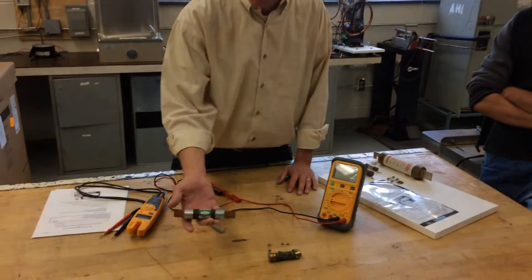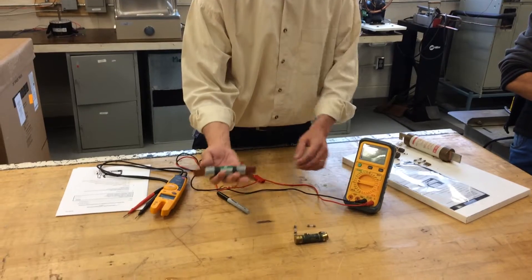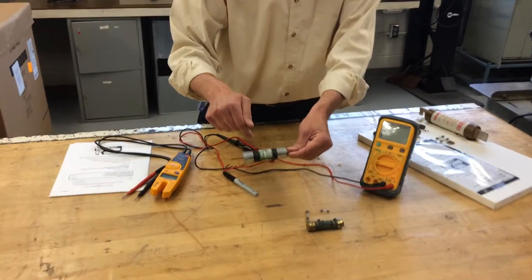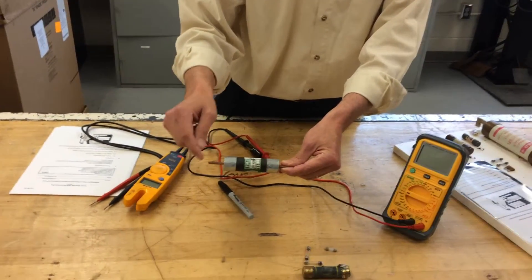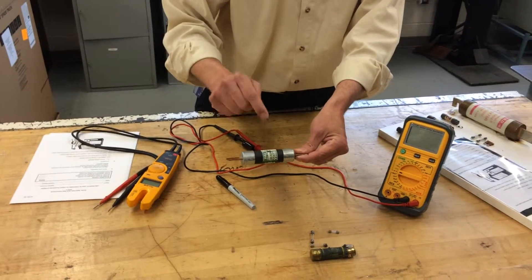So that's what these are. These are sacrificial devices inside the circuit. So if there's too much current flowing through it, this is the weakest link.